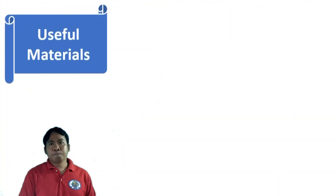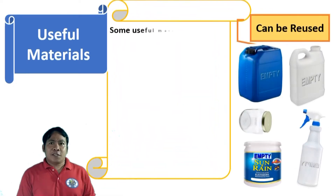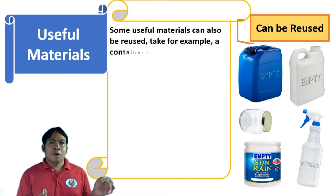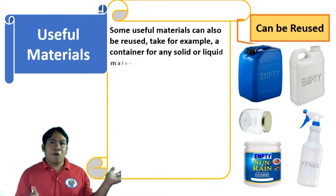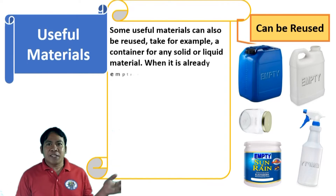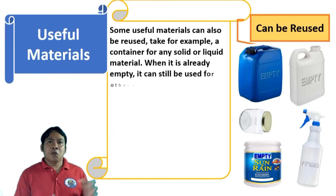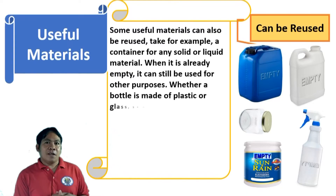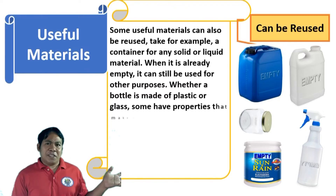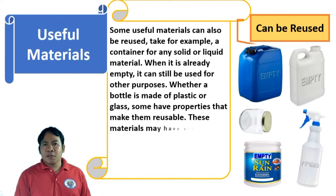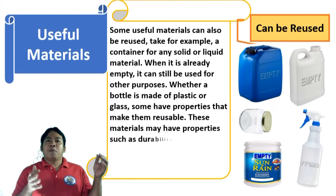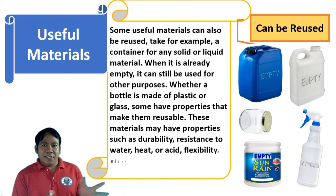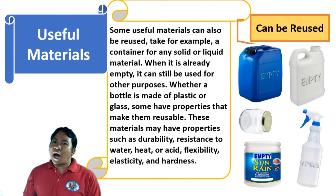Some useful materials can also be reused. Take for example a container for any solid or liquid material — when it is empty, it can still be used for other purposes. Whether a bottle is made of plastic, glass, or other materials, they may have properties such as durability, resistance to water, heat, or acid, flexibility, elasticity, and hardness that make them reusable.